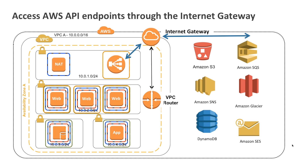A NAT instance allows instances in your private subnets outbound connectivity to the internet without allowing inbound connections to those services. This is also how you can utilise Amazon's internet APIs from your private hosts within your virtual private cloud. For example, if your web and application servers want to write their logs out to Amazon S3, a NAT instance gives those hosts the ability to talk to S3 without you having to allow internet traffic back in.